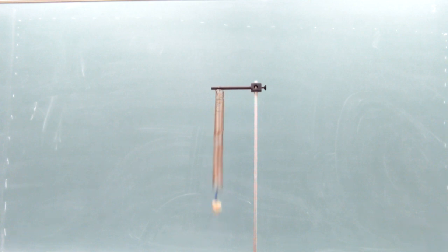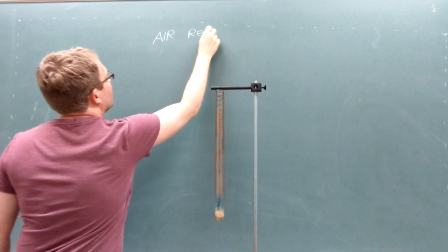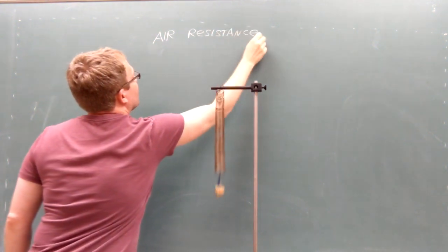The force of air resistance always points opposite of the block's velocity, which means there are four combinations of how it can interact with the force from the spring.